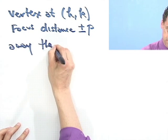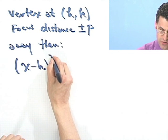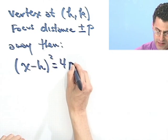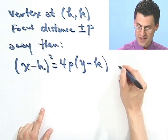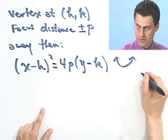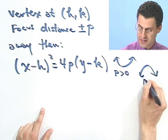Then either the equation is (x minus h) squared equals 4p(y minus k). And that's if you have a parabola that's either going to be a happy face or a sad face, depending upon whether p is positive or p is negative.